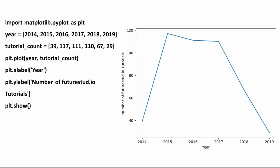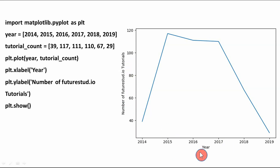This is the first example: a line graph. To draw a line graph we require x-axis values and y-axis values. The first statement is to import matplotlib — specifically the pyplot interface — as plt. This is the alias name for matplotlib.pyplot.